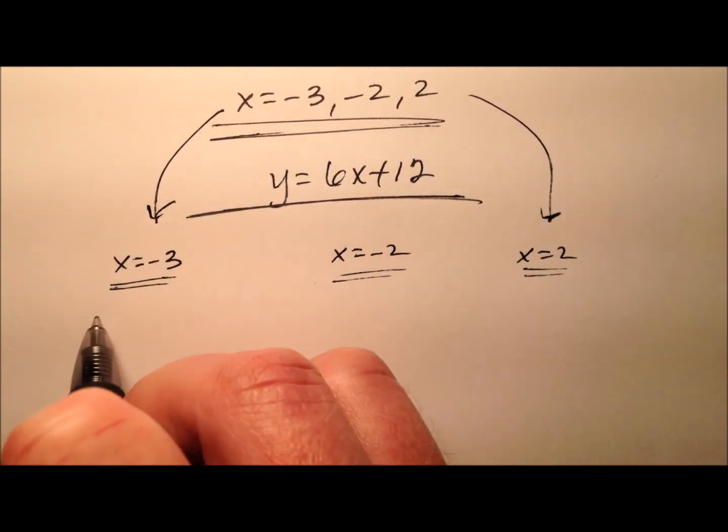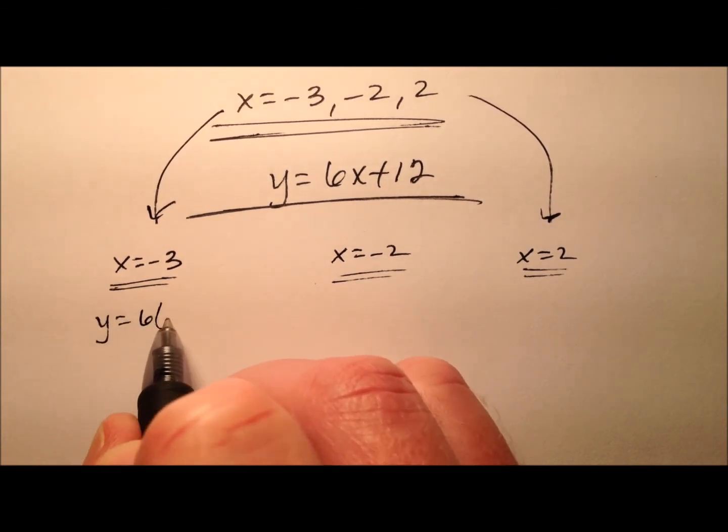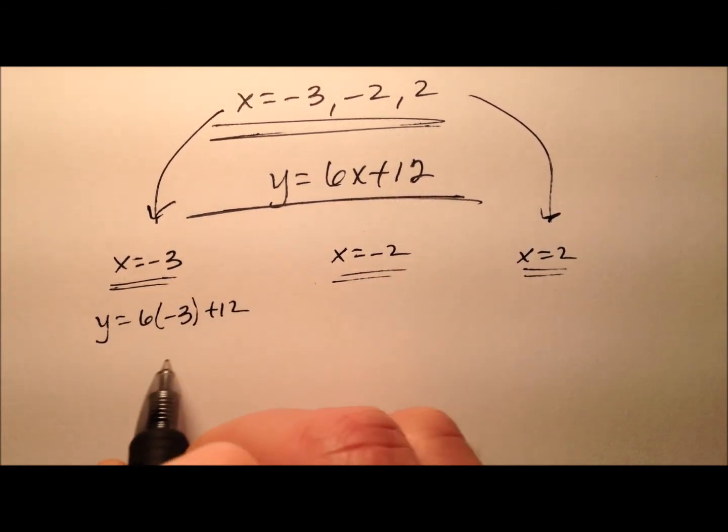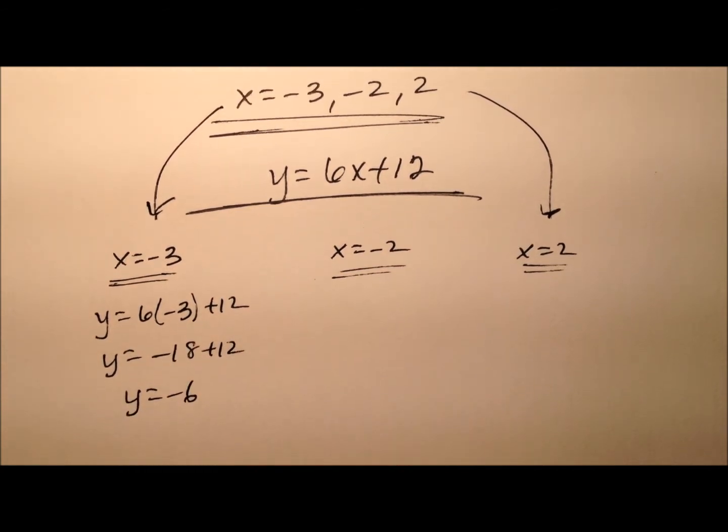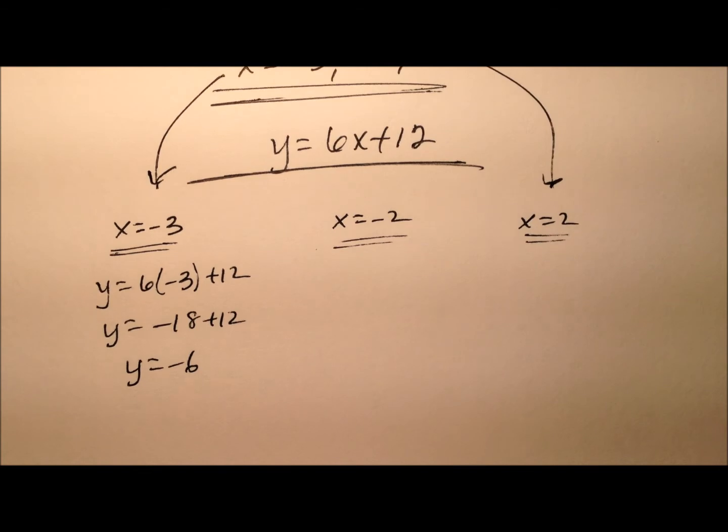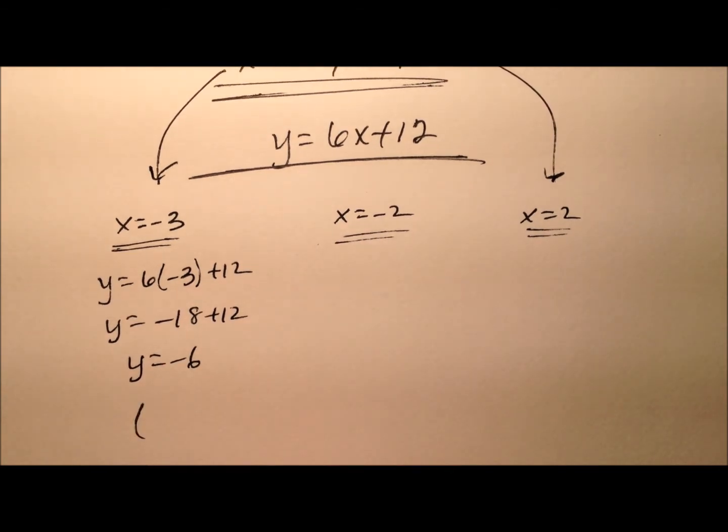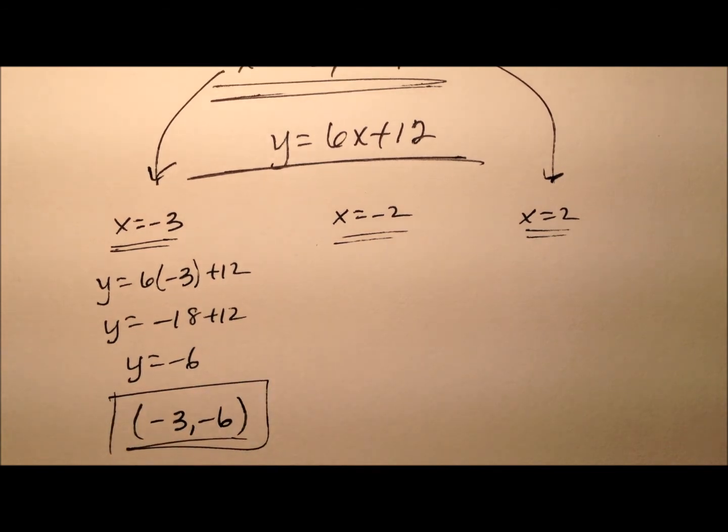So let's put negative 3 in first. So y equals 6 times negative 3 plus 12. That'll give us negative 18 plus 12, which will give us a y value of negative 6. So this ordered pair solution will be negative 3, negative 6. And there's the first one.